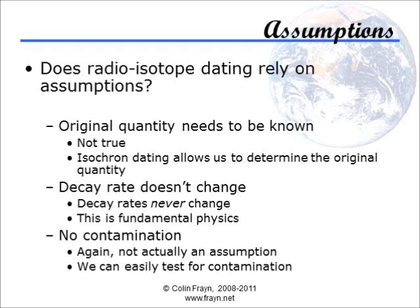So you can add together the remaining parent isotope and the amount that must have decayed to produce the observed amount of the daughter. Of course, you're assuming that you know there was none of the daughter isotope in the sample initially, or that you know how much there was. This is usually a fair assumption, but not always.